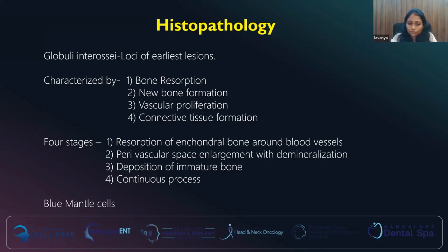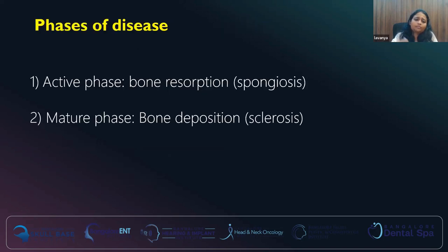When you look at the histopathology of otosclerosis, what are blue mantle cells? If we take histopathological cuts and stain them, the otosclerotic foci take up the basophilic stain and appear extremely blue — that is why these foci are known as blue mantle cells. The two phases of the disease are: the active phase, where bone resorption and vascular proliferation are taking place — also known as spongiosis — and the mature phase, where there is bone deposition and sclerosis, also known as the sclerotic phase.